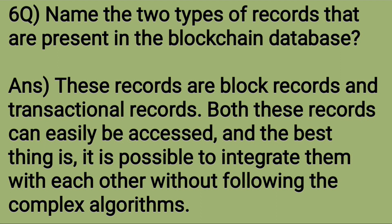Name the two types of records that are present in the blockchain database. These records are block records and transactional records. Both these records can easily be accessed, and the best thing is it is possible to interact with them with each other without following complex algorithms.